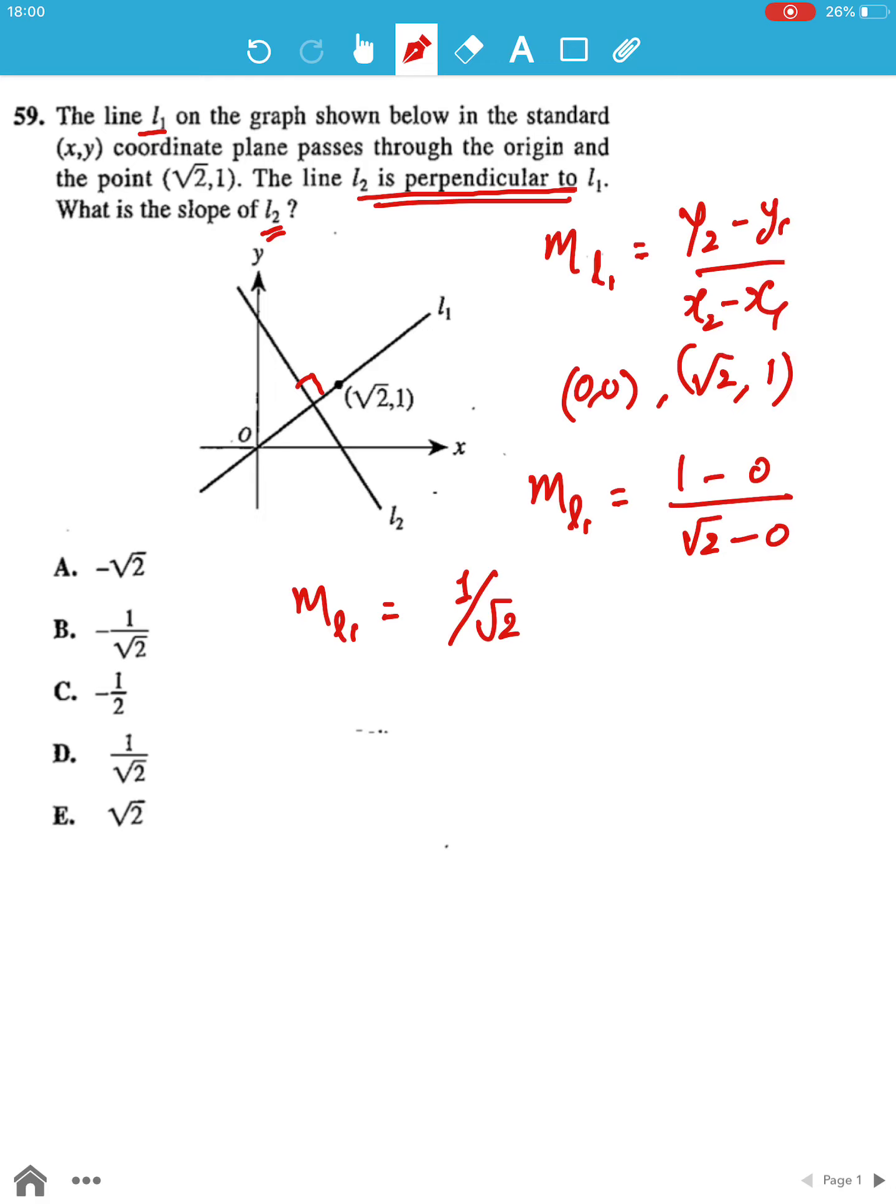We can keep this as 1 by root 2, and now we know that since they are perpendicular, the gradients M1 into M2, or ML1 into ML2, is equal to minus 1, the product of the gradient since they are perpendicular to each other.